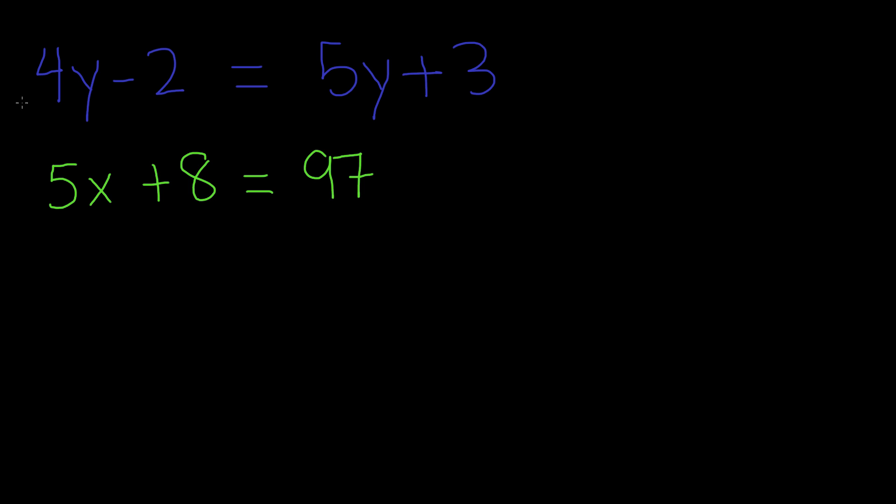Alright, let's do another example. Let's say we have 9r minus 15 is equal to 23r plus 36. This is also an equation. Now in this case, we have the same variable, which is r.